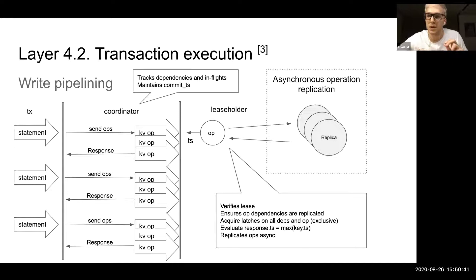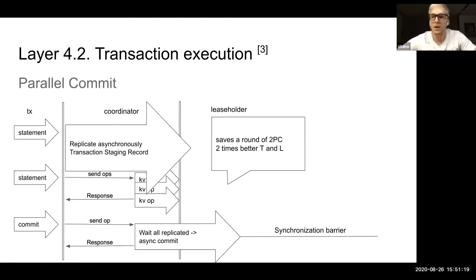That's an important point, meaning that if all operations are independent, then they all will be processed in parallel. The leaseholder starts asynchronously replication and evaluation of the operation on the node and responds to the coordinator that it's processed. Then when the replication and commit to the Raft log finish, it asynchronously replies to the coordinator with a message that the operation is finished. In that way, all the operations can be processed in parallel, saving a lot of round trips.